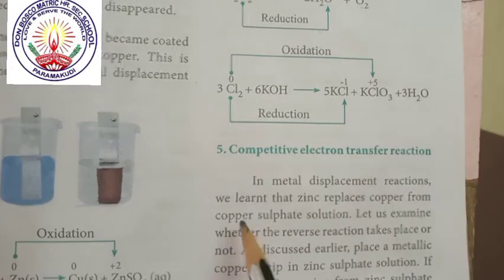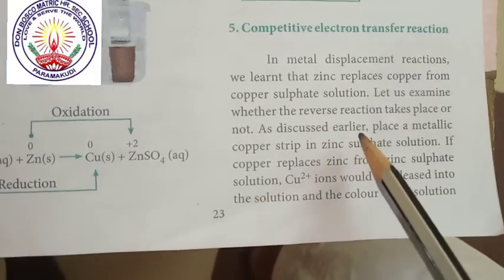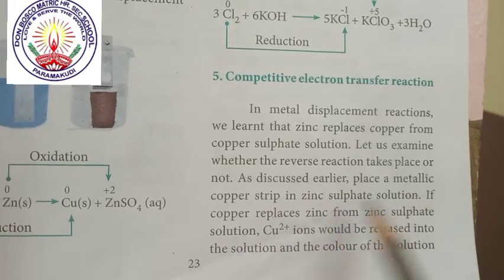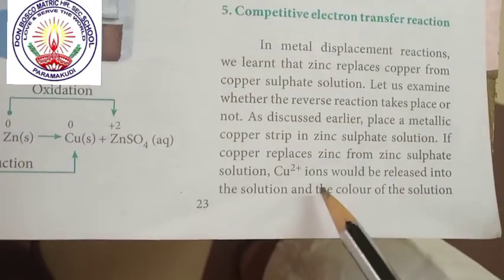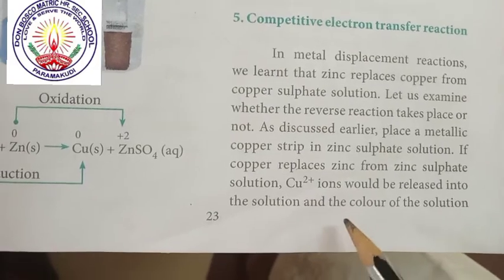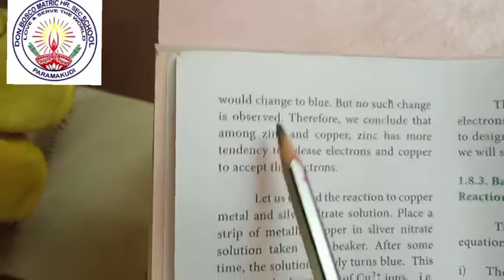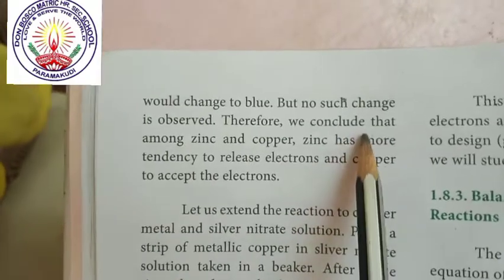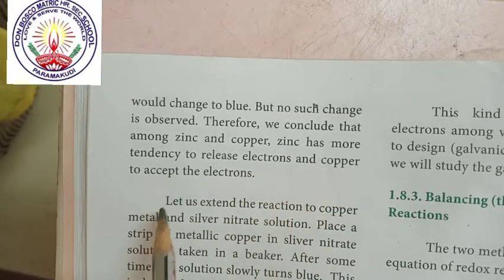In the metal displacement reaction, we learned that zinc replaces copper from copper sulfate solution. Let us examine whether the reverse reaction takes place or not. Place a metallic copper strip in zinc sulfate solution. If copper replaces zinc from zinc sulfate solution, copper 2+ ions would be released into the solution and the color of the solution would change to blue, but no such change is observed. Therefore we conclude that among zinc and copper, zinc has more tendency to release electrons and copper to accept electrons.